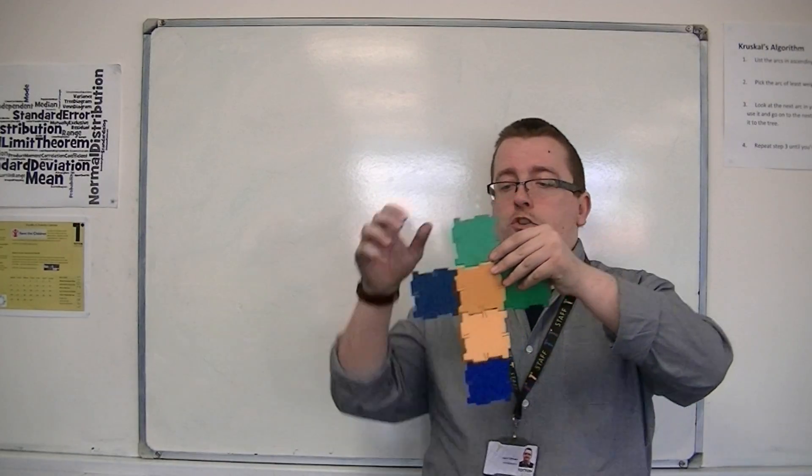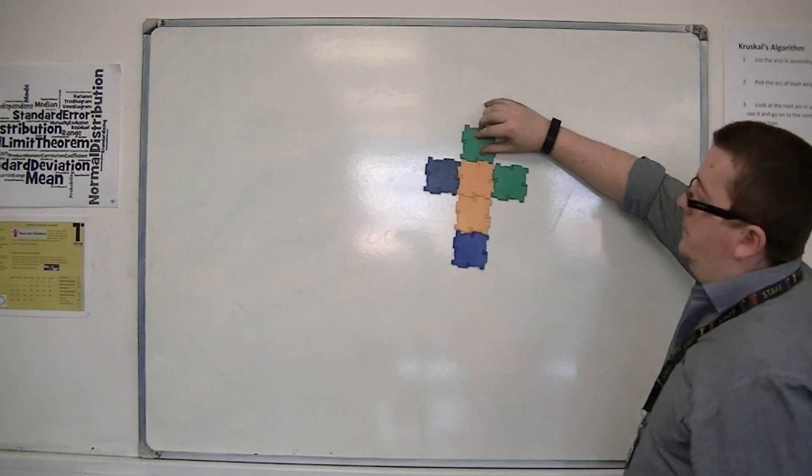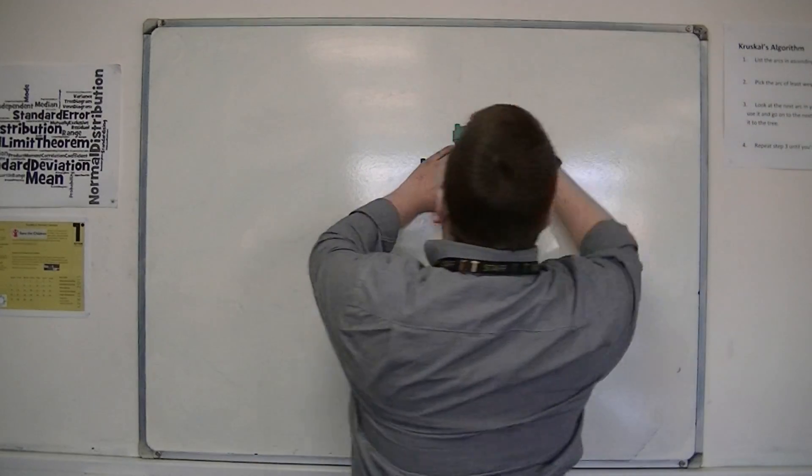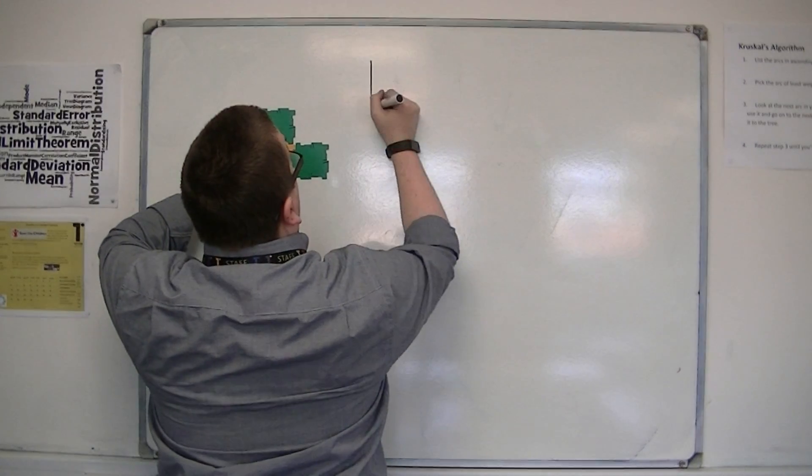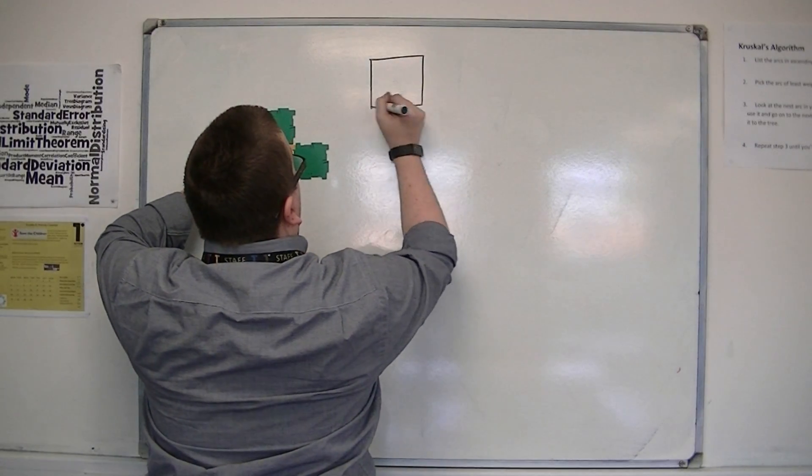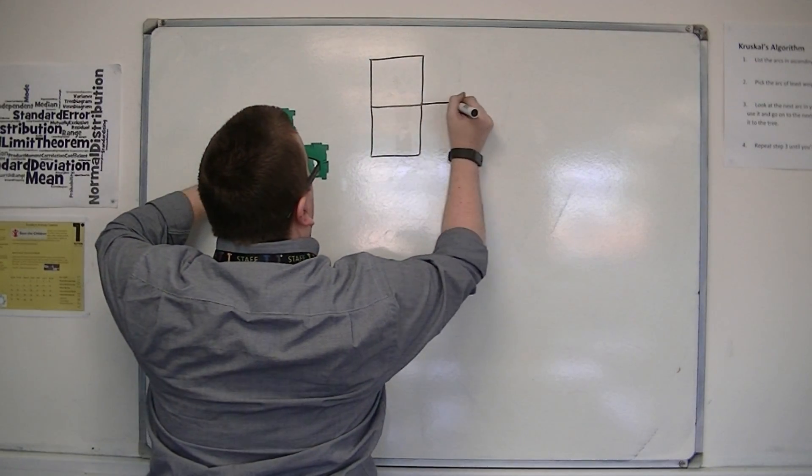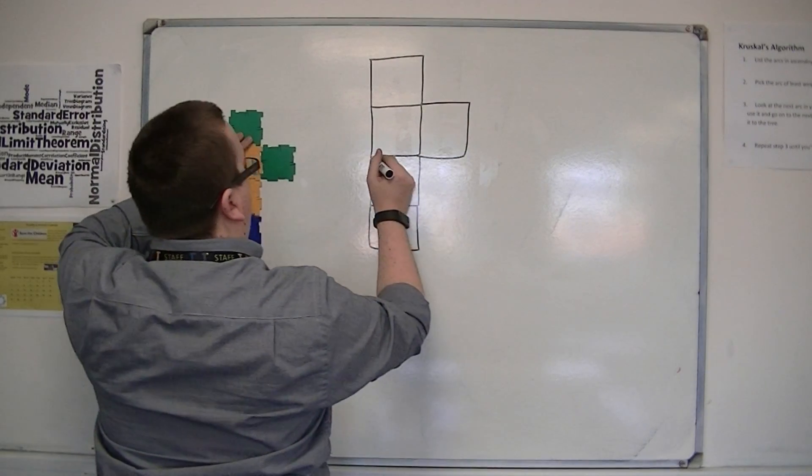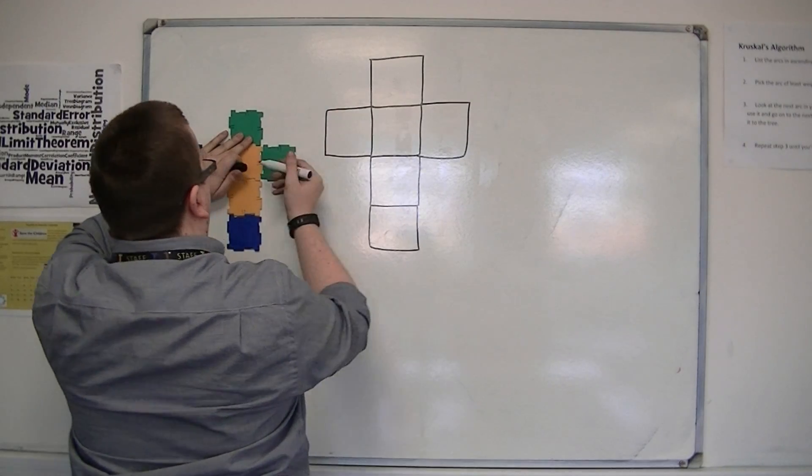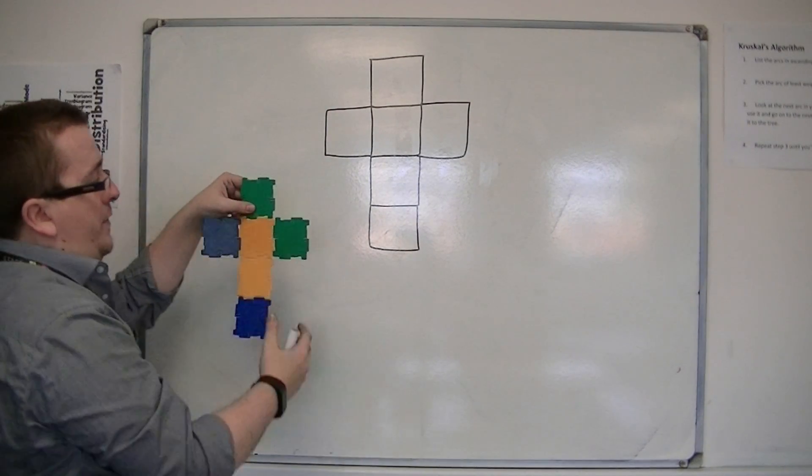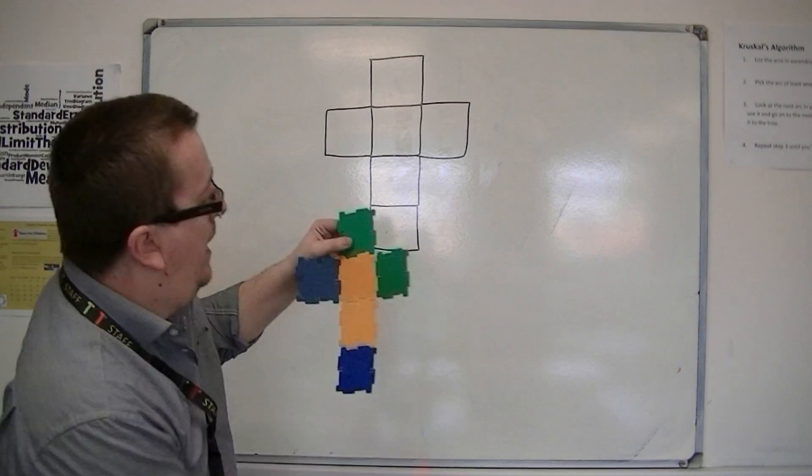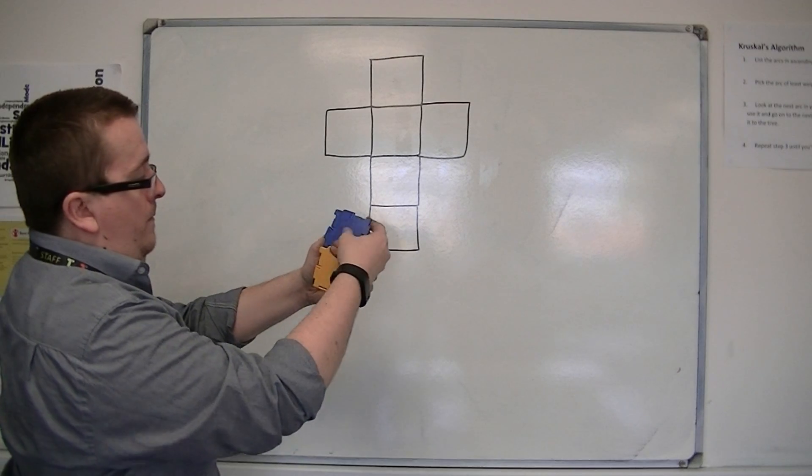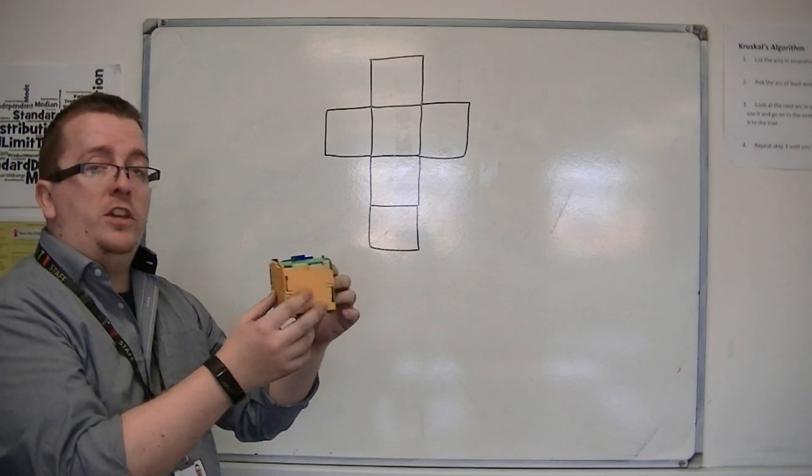So I've unraveled the shape into this shape here. So I could draw the net of a shape, or the net of a cube, like so. So that would be the net of a cube. And you can see how it would fold up together to make the cube again.